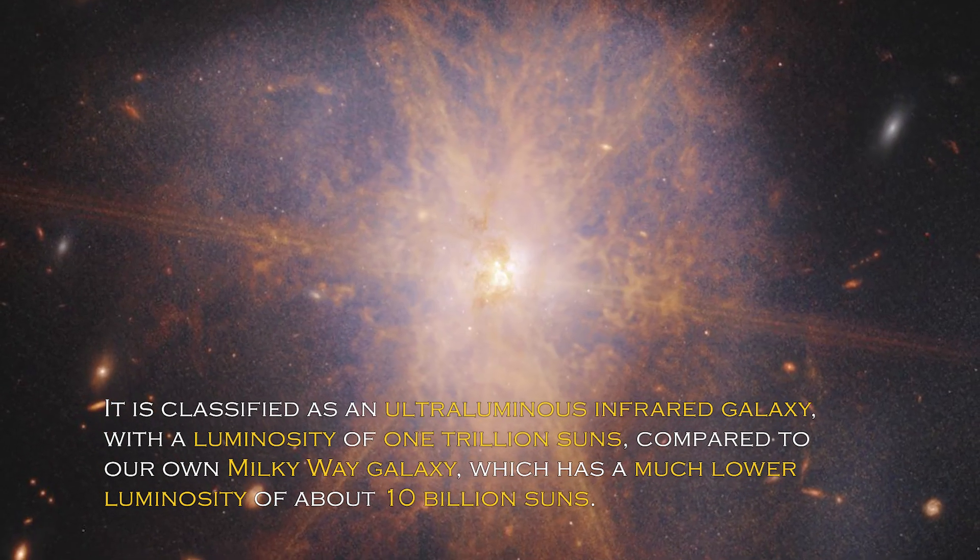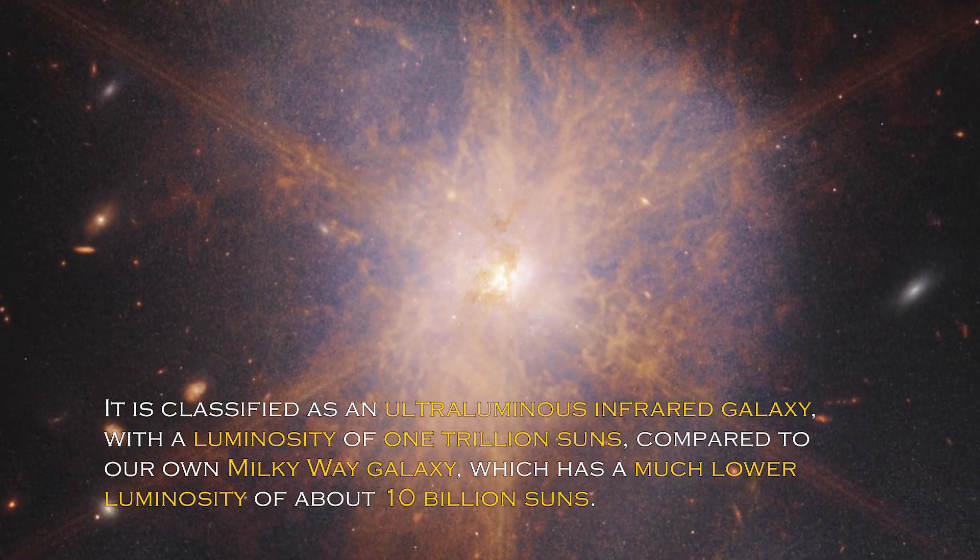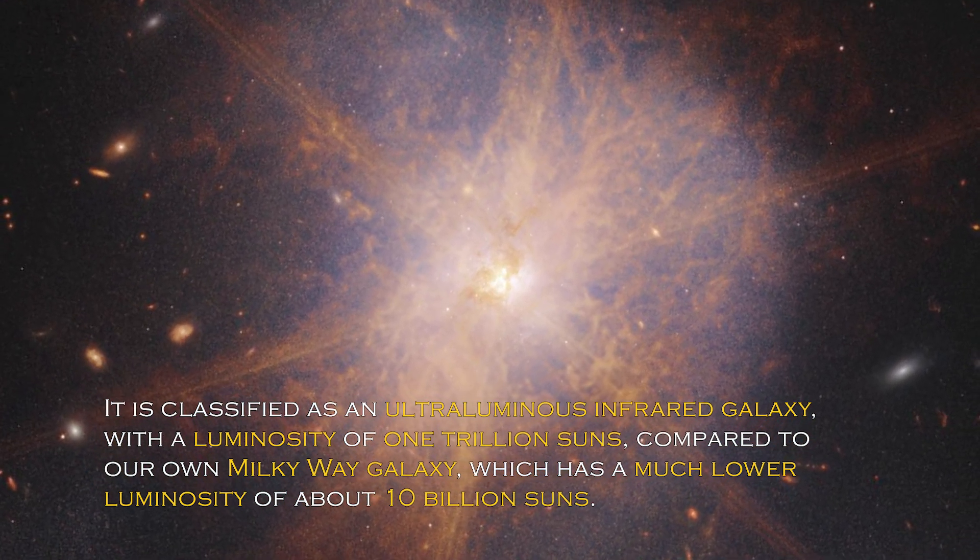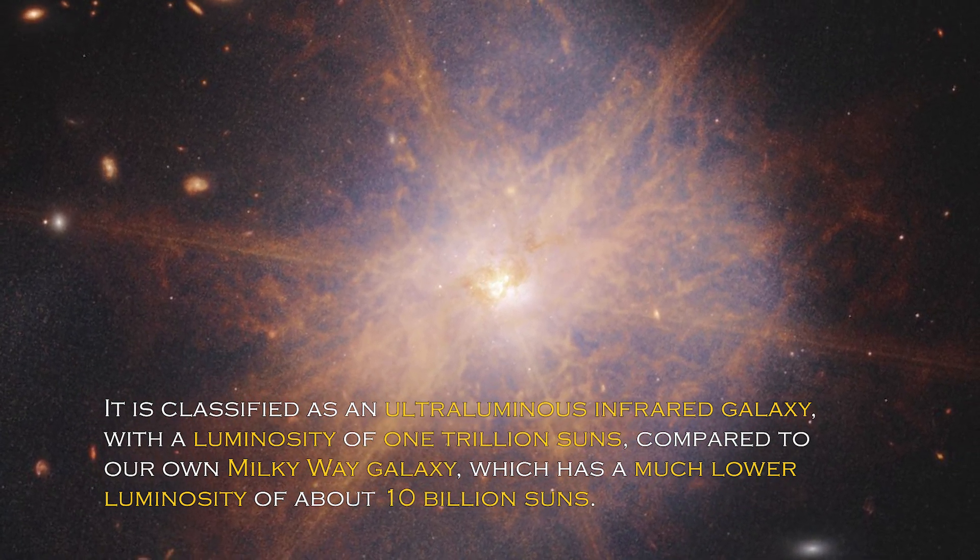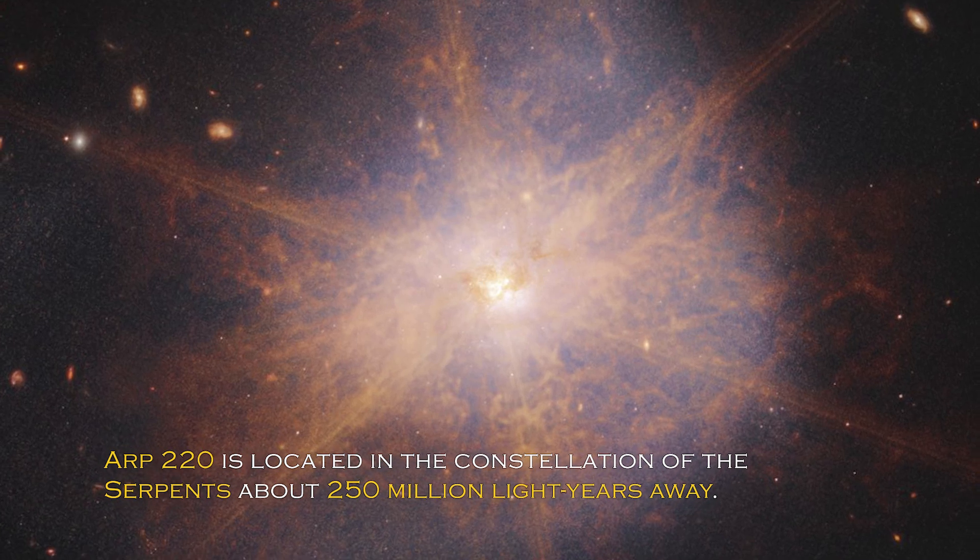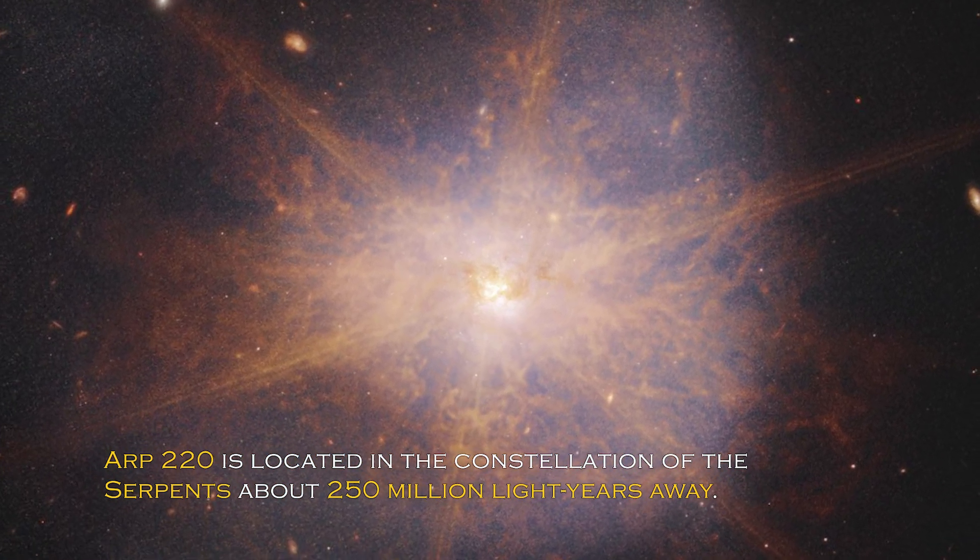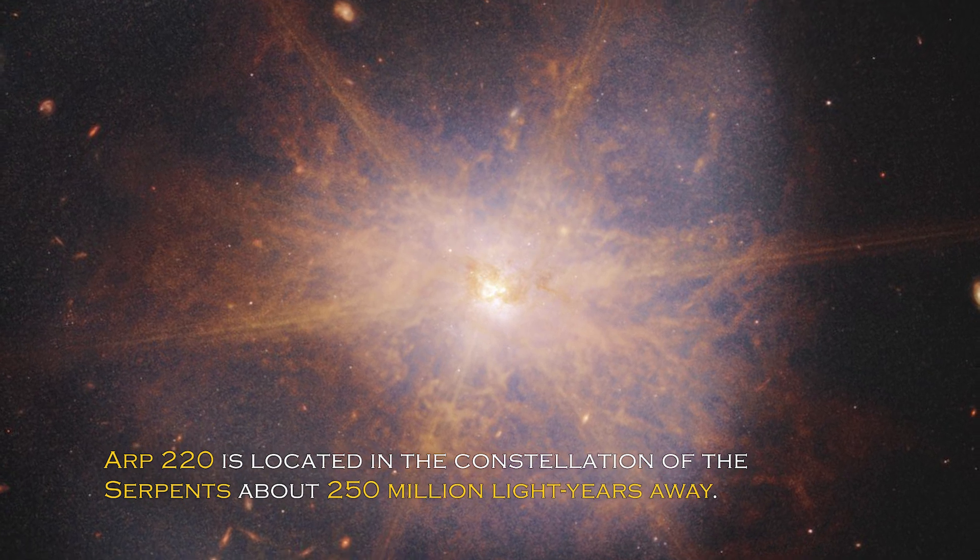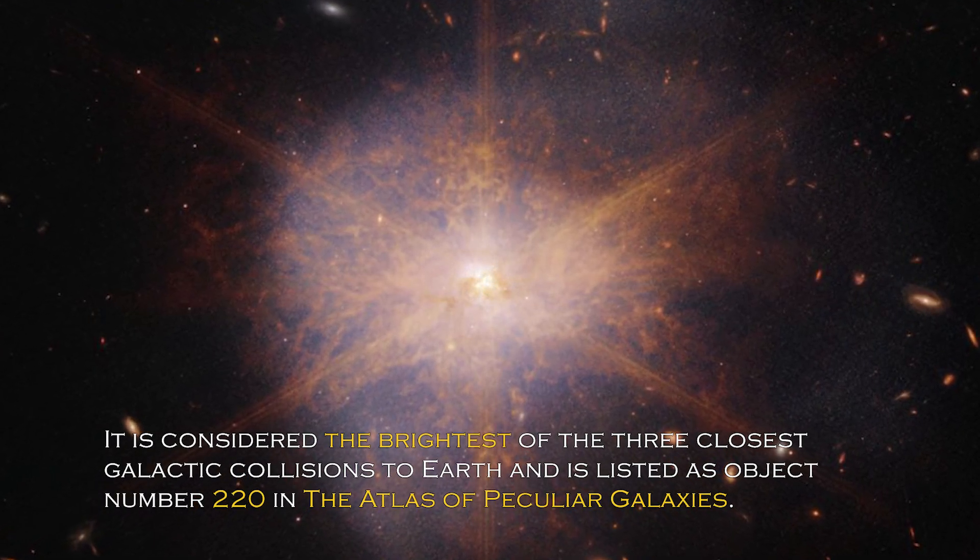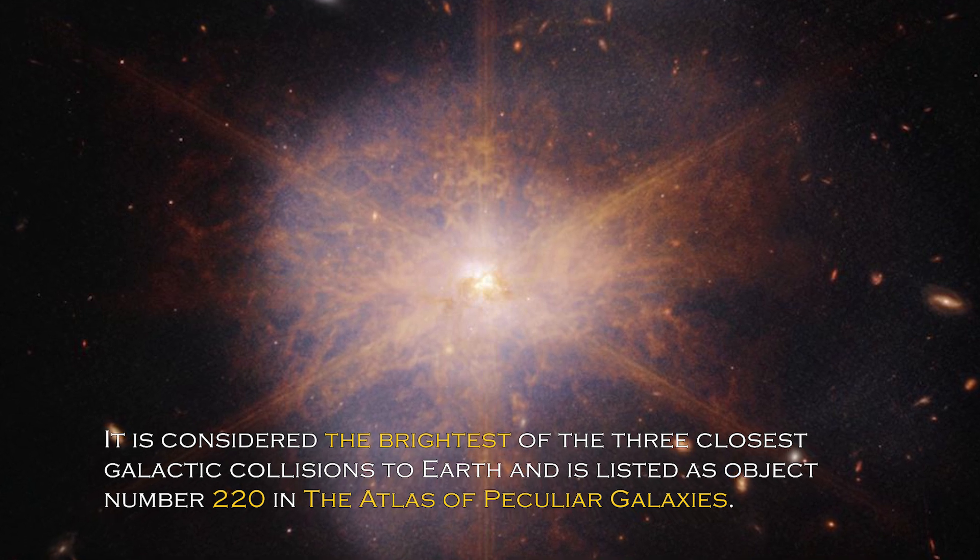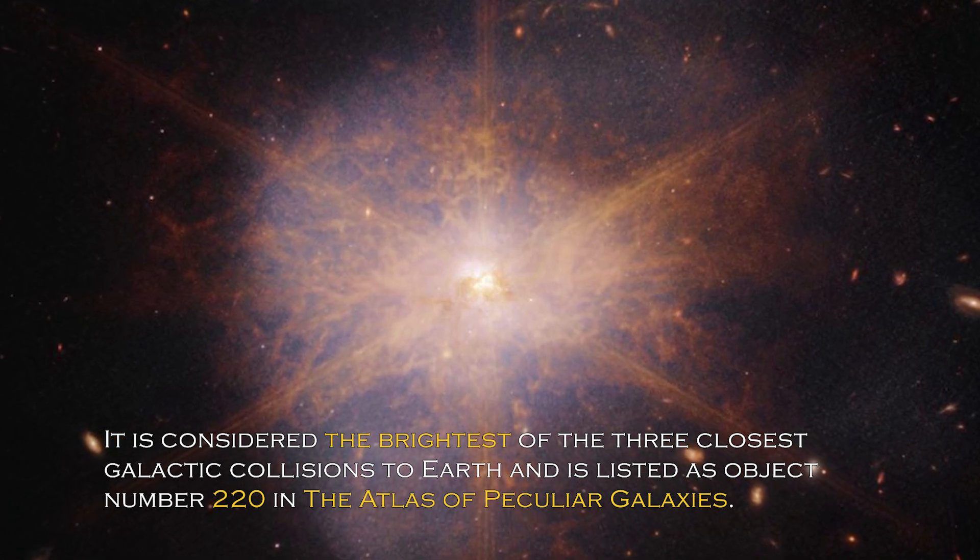It is classified as an ultra-luminous infrared galaxy, with a luminosity of a trillion suns, compared to our own galaxy, the Milky Way, which has much lower luminosity of about 10 billion suns. ARP 220 is located in the constellation of Serpens, about 250 million light-years away. It is considered the brightest of the three closest galactic collisions to Earth.